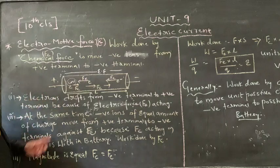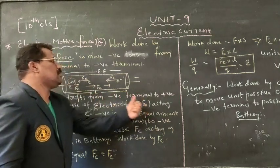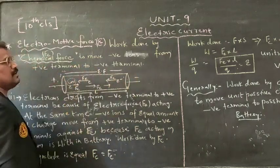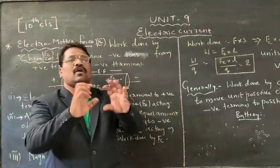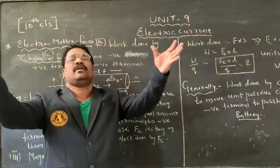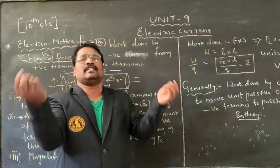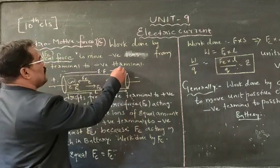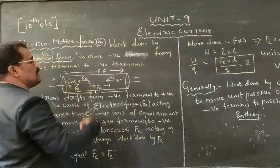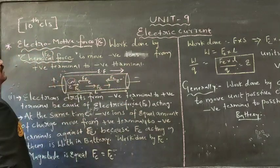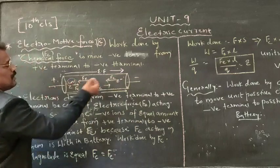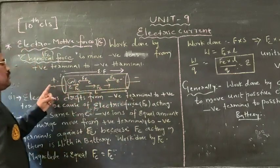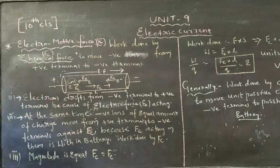When we connect to a source, electrons drift from the negative terminal to the positive terminal. Why? Before connecting to a source, all electrons move randomly. As we connect to a source, due to applying a uniform electric field in a specified direction, exactly opposite to that, electron drift changes its direction and moves from negative terminal to positive terminal.